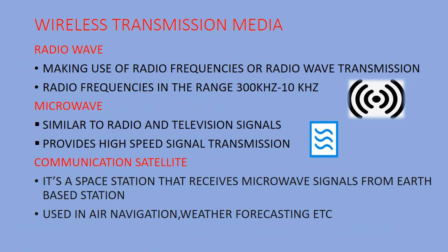Next is radio waves — it makes use of radio frequency transmission and may have a frequency in the range of 300 kilohertz to 10 kilohertz. Next is microwave — similar to radio or television signals but providing higher frequency transmission than radio waves. Next is communication satellite — it is communication between space stations. The space station receives microwave signals from earth-based stations and is used in air navigation, weather forecasting, etc.